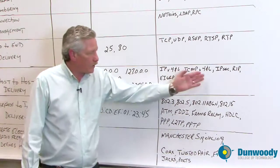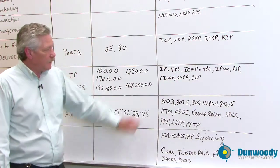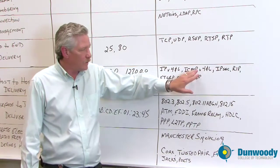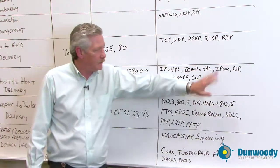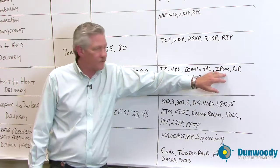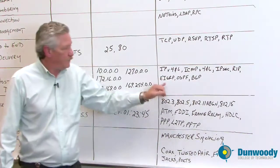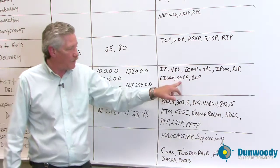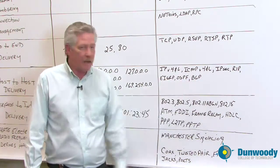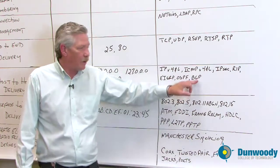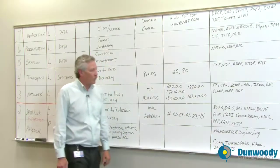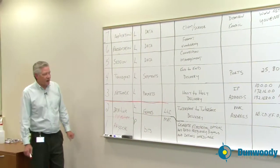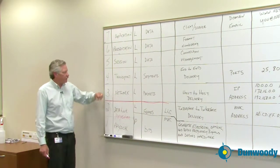And some of the protocols that run on layer 3, of course, are IP version 4 and 6, ICMP 4 and 6, which are the tools used for connectivity. IPsec, which is for security. The four interior routing protocols, RIP, EIGRP, and OSPF. And then last, the outside routing protocol, border gateway protocol. So if anybody ever asks you where ping happens, it's on layer 3.